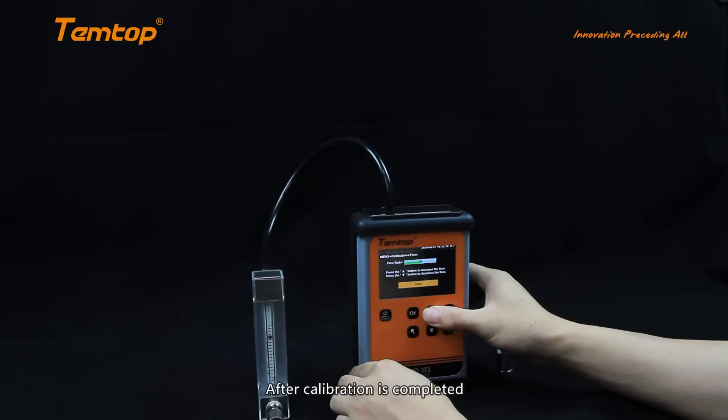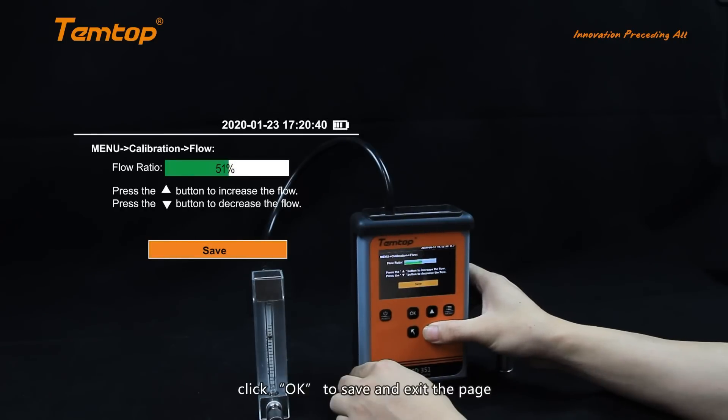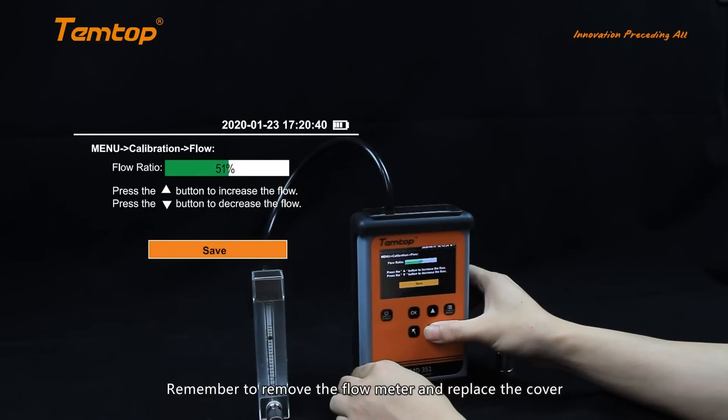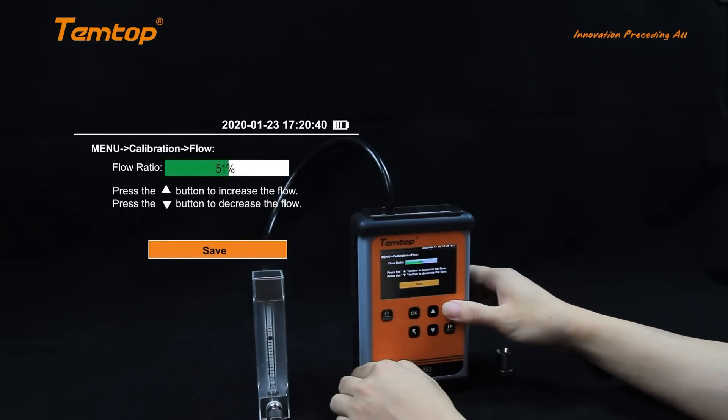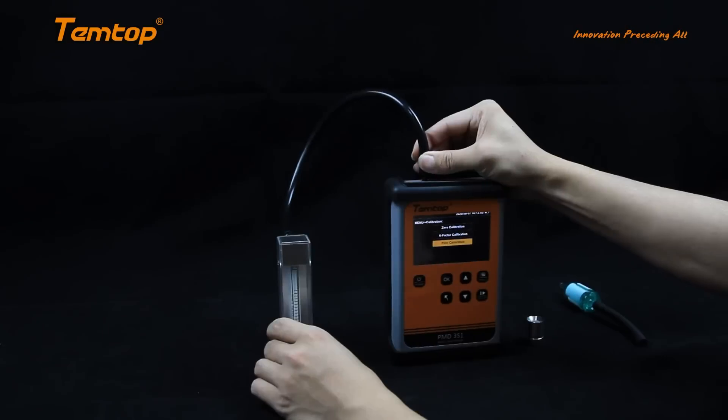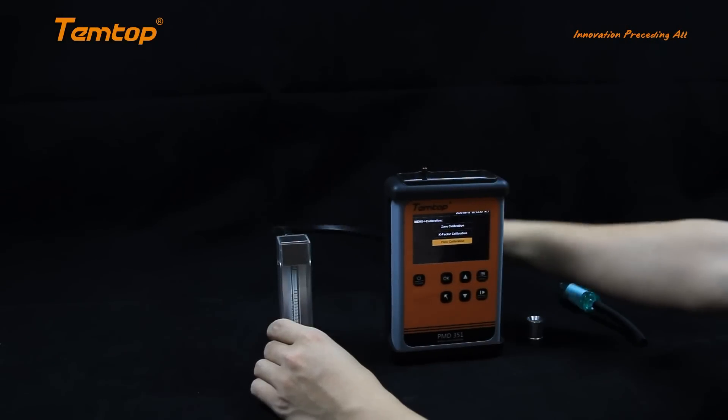Click Up and Down to adjust the value until the flow meter indicates 2.83 liters per minute. After calibration is completed, click OK to save and exit the page. Remember to remove the flow meter and replace the cover.